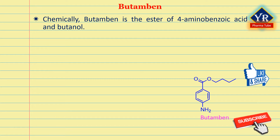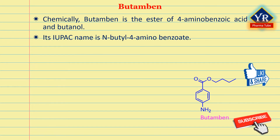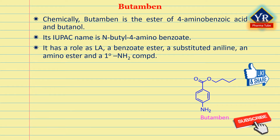The next drug is butamben. Butamben is structurally the ester of 4-aminobenzoic acid and butanol. Its IUPAC name is n-butyl-4-aminobenzoate. It is an amino ester resulting from the formal condensation of the carboxy group of 4-aminobenzoic acid with the hydroxyl group of 1-butanol. It has a role as a local anesthetic; it is a benzoate ester, a substituted aniline, an amino ester, and a primary amino compound.